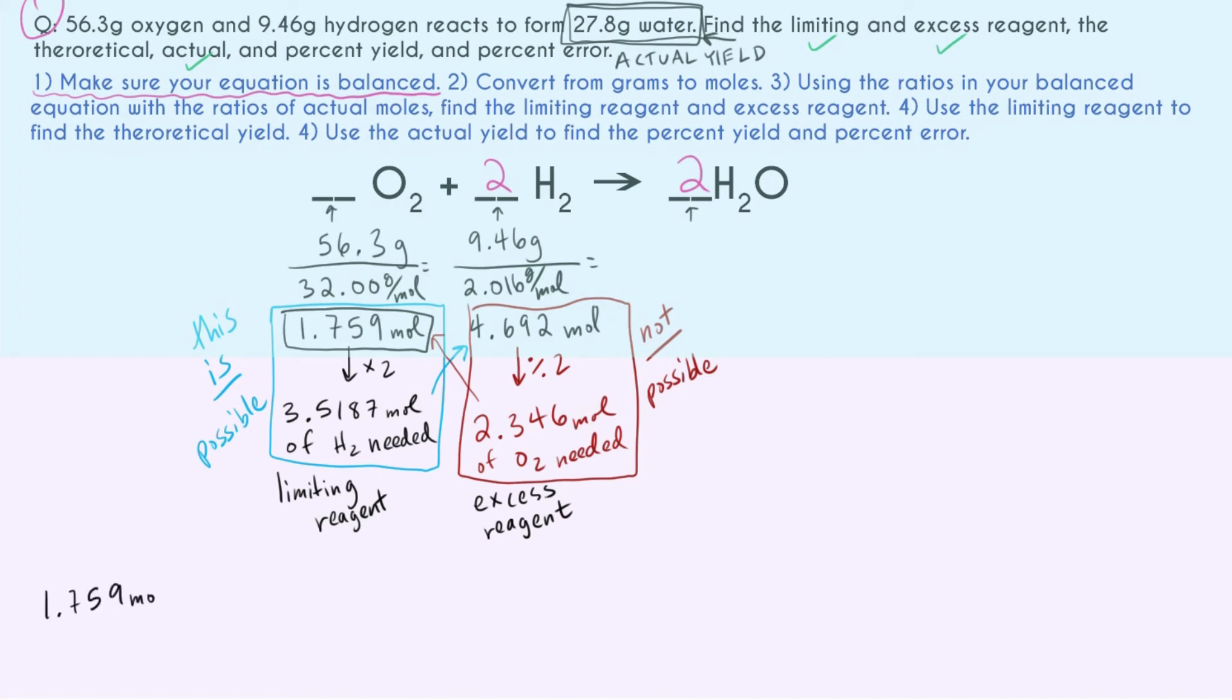Now let's do the theoretical yield. And so the theoretical yield is usually what students think about first when they think about yields. This just means what it sounds like. Theoretically, how much of this could we made? How much water in a perfect world could we have made? If we had 100% success, if we didn't spill one molecule, how much water could we have made?